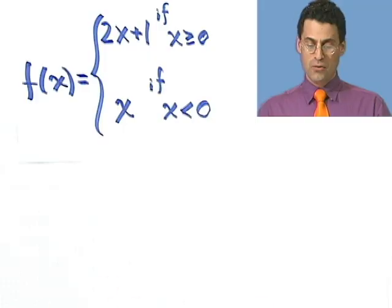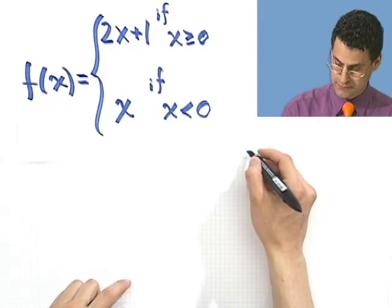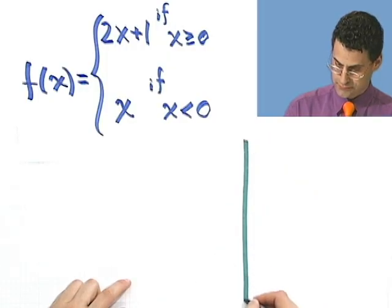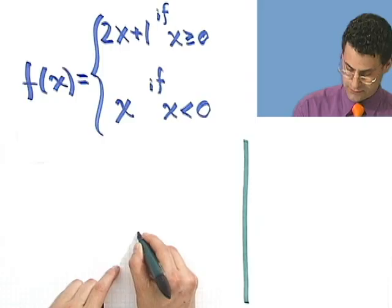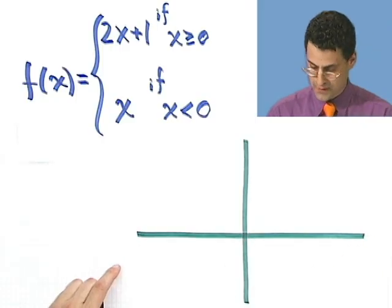So now how would you graph this? Well the way I would graph this is I would graph each interval separately. So for example, what I see here is the following. Let's graph in green. If you take a look at this, here are my axes.